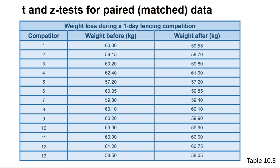Such data is called matched or paired data and is useful since it minimises the number of confounding variables that would be present if we measured a different set of individuals before and after the competition.